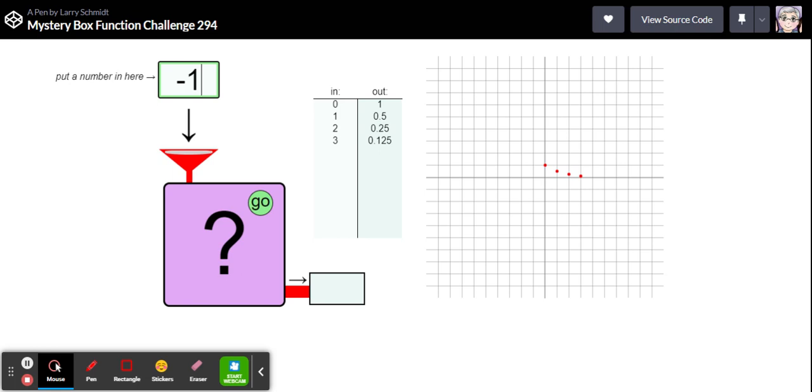Let's go in the negative direction. So negative one here, and that gives us a two. Let's do negative two. Now we're up at four and negative three I think I'm going to get an eight.